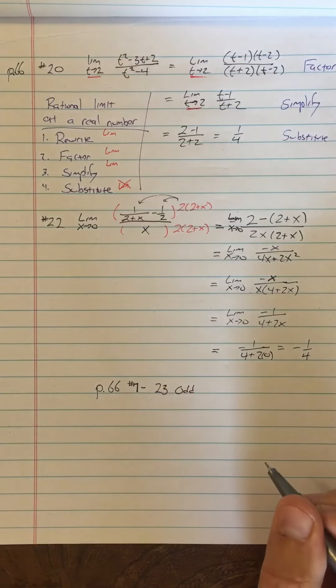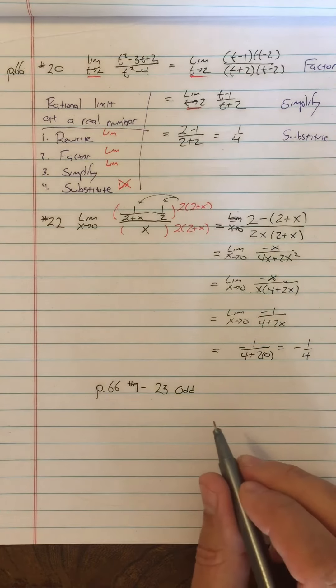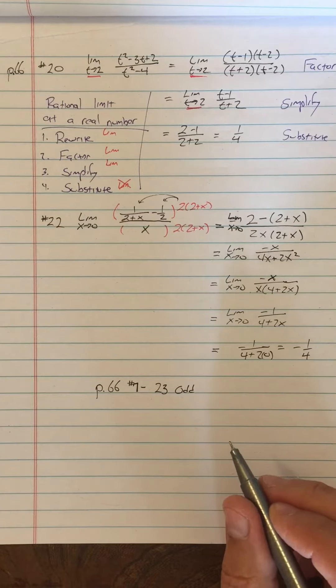Alright, so number 7 through 23 odd on page 66. You should start that homework now before you do the next video.